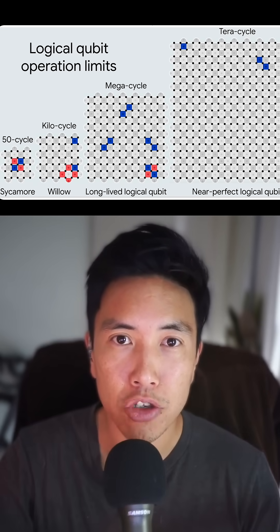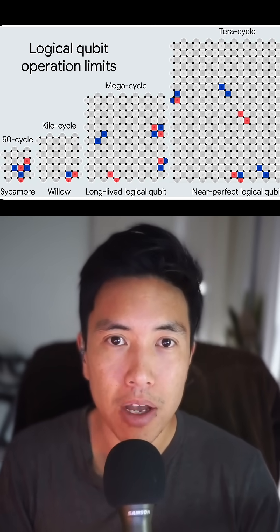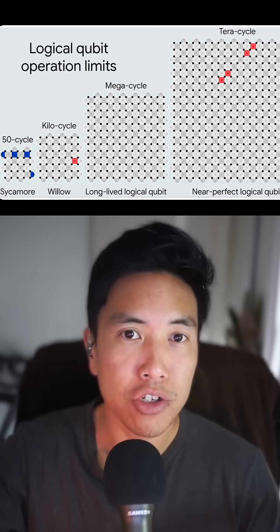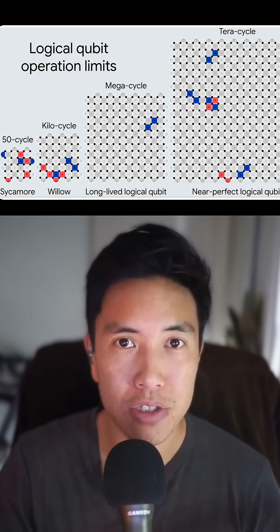the blues and the red qubits working together. So whenever there's an error that comes up, the blue qubits, or the blue error checker qubits, will come in and will fix that error. That's the really interesting thing.